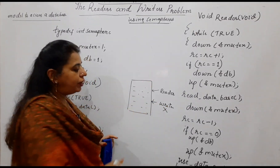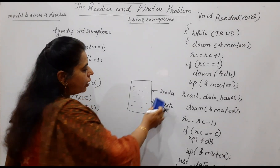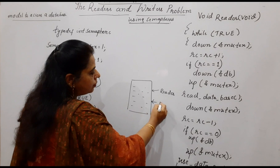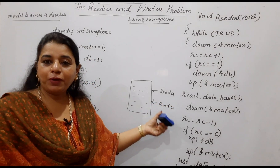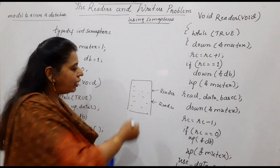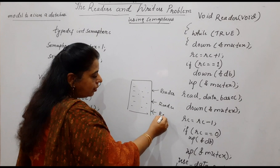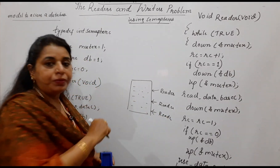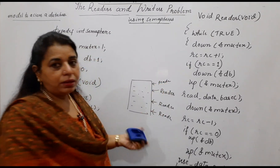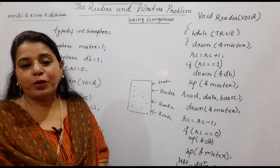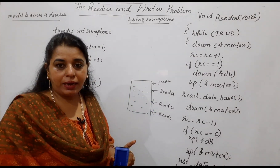Now, our job is to see that if there is a reader process, can you allow the writer process also at the same time? Definitely not, because the writer is going to modify the contents of the database while the reader is accessing it. Once the contents are being updated at the same time, the reader may not get the correct values from the database. So you cannot allow a writer process to enter the critical section when there is already a reader. You can allow any number of readers to access the database.